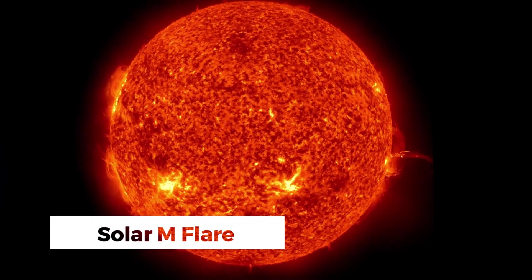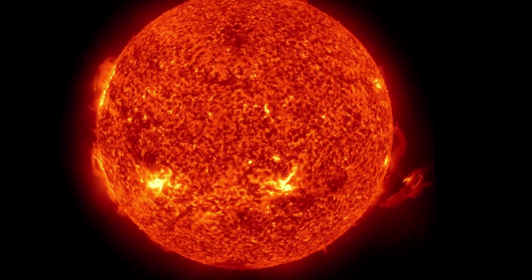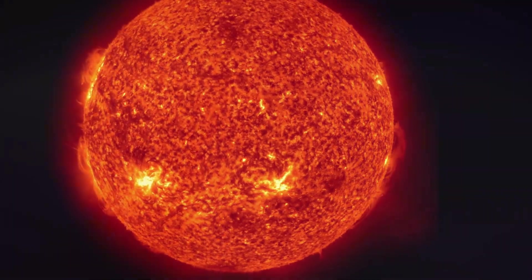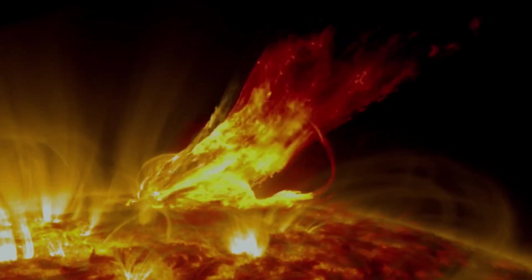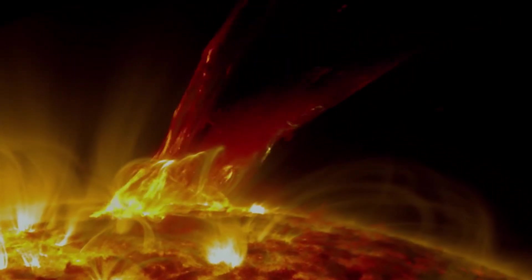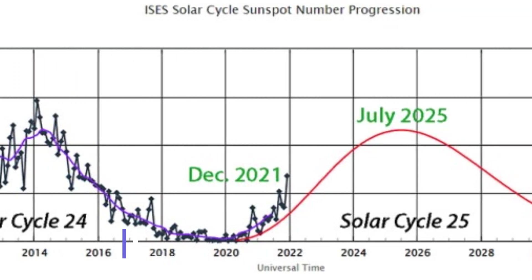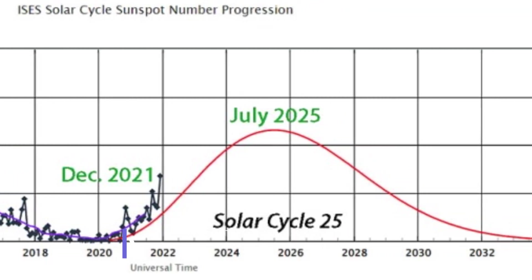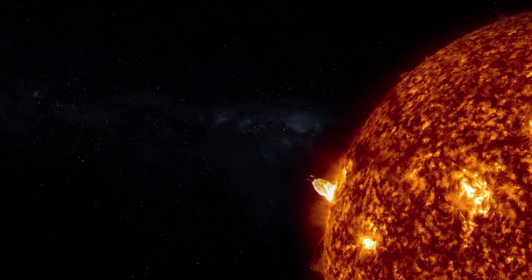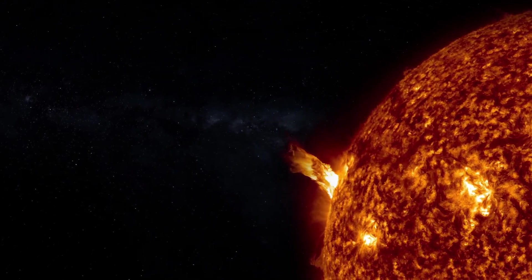As we move closer to the solar maximum, a phase in the solar cycle where solar activity peaks, the Sun's activity is anticipated to intensify in the upcoming months. This peak is projected to occur around 2024 or 2025, and the current count of sunspots has already surpassed prior estimates.